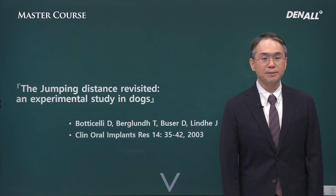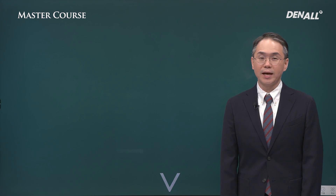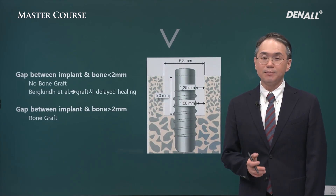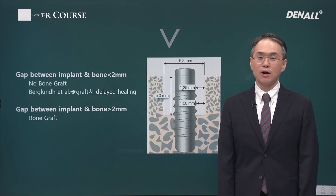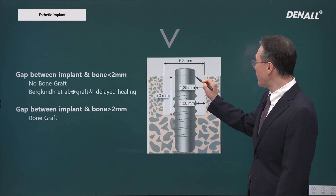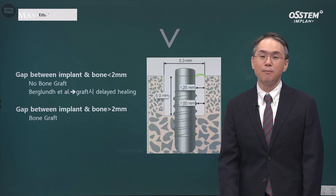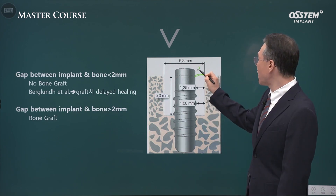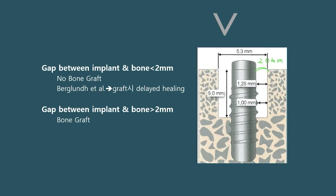The biggest reason why we need to place the implant palatally is to secure sufficient space for graft materials. When we do graft management, there is research that is frequently referenced — this is by Botticelli in 2003. It is called jumping distance: after doing immediate placement, the maximum gap distance that can be filled up naturally without bone graft refers to jumping distance. It is known to be 2.0 mm; it may differ depending on implant surface, but for SLA surfaces it is known to be 2.0 mm. When we do immediate implant placement, if the gap is bigger than 2.0 mm, then grafting is recommended. If it is smaller, you don't need to do bone grafting.